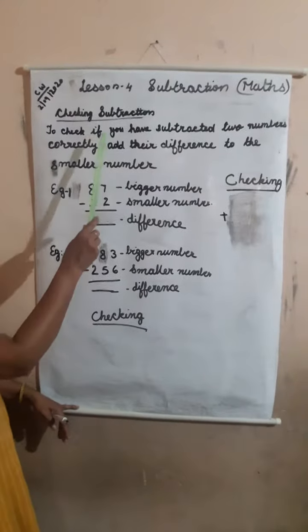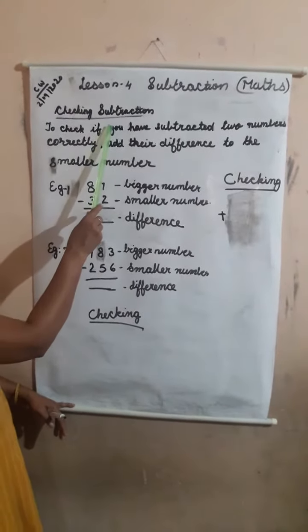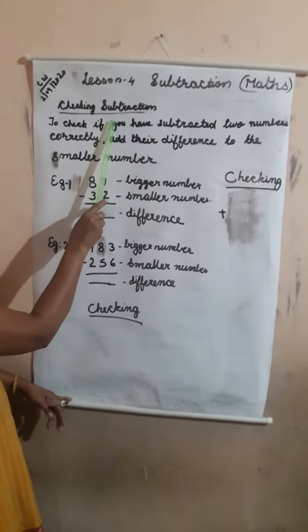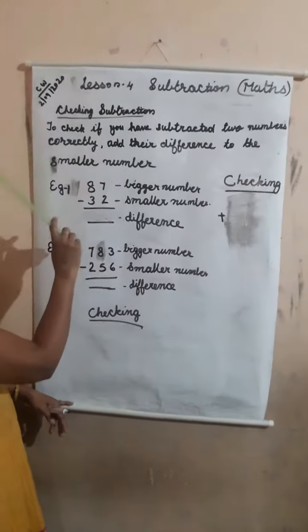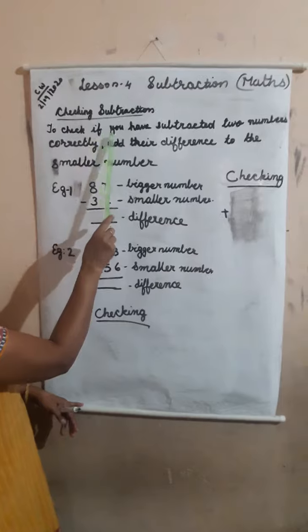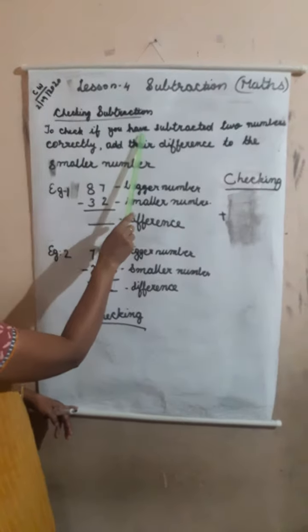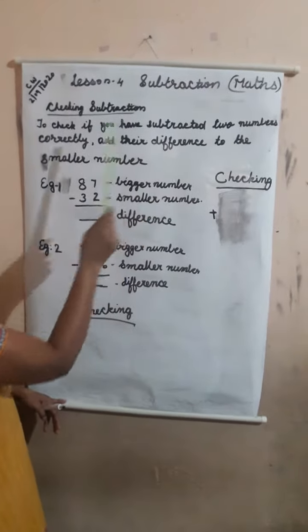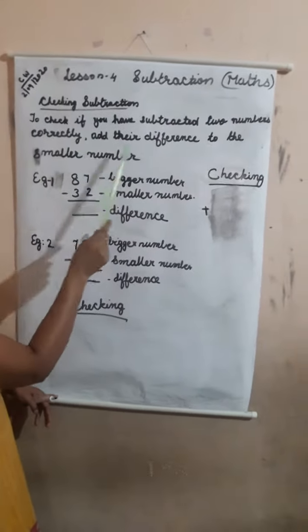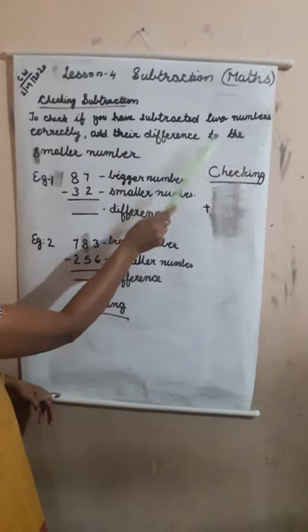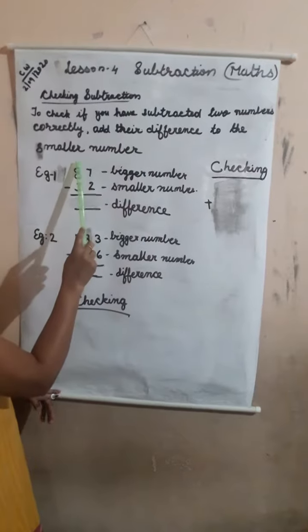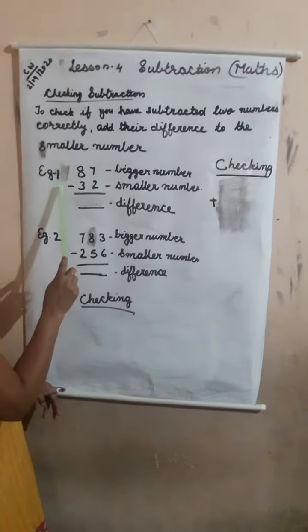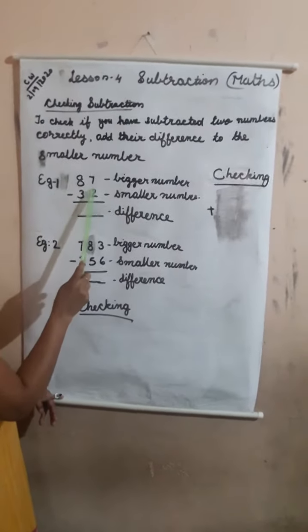Good morning children. Today let us start a new topic: checking subtraction. To check if you have subtracted two numbers correctly, add the difference to the smaller number. Look at the example.